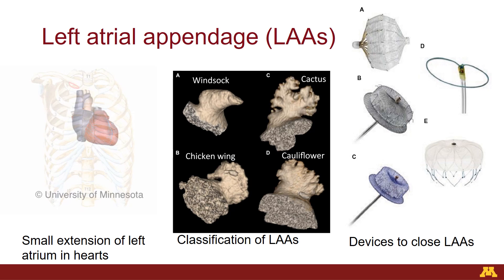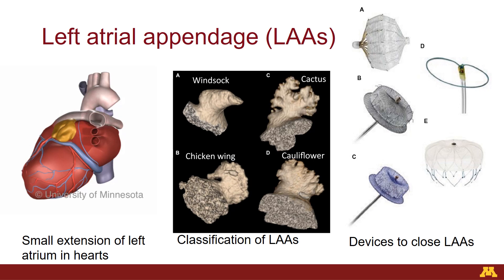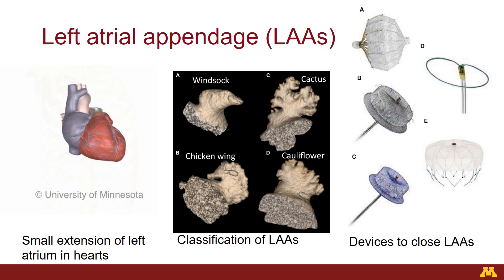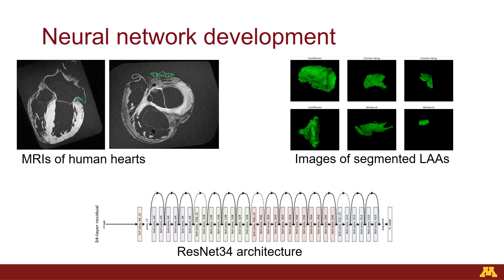There are a lot of different devices — more than are shown here on the right-hand side — that will close the left atrial appendage, but determining which device to use is often based upon the windsock, chicken wing, cactus, or cauliflower classification.